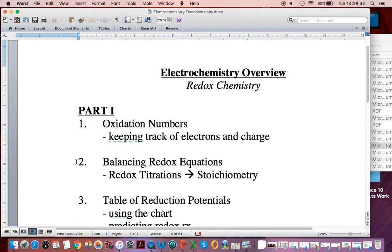Today we're going to look at oxidation numbers, learn how to calculate them as a way of keeping track of electrons and charge, and then we're going to learn how to balance redox equations. That involves what are called half-reactions.